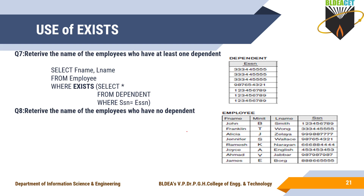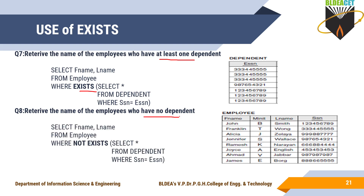Next, let's see how NOT EXISTS works. The example is: retrieve the name of employees who have no dependent. If the condition is 'who have no dependent,' then the query is: SELECT F_name, L_name FROM employee WHERE NOT EXISTS (SELECT * FROM dependent WHERE SSN = ESSN).